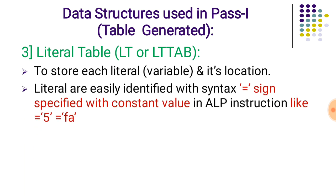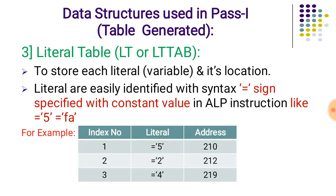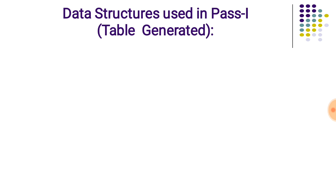The third data structure used in pass one is the literal table. Literals are constants that are part of an ALP instruction. Literals are always easy to identify with the syntax using the equal-to sign. The literal table has three fields: index number, literal, and its corresponding address.